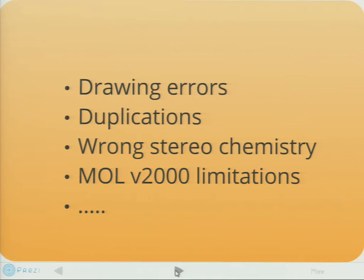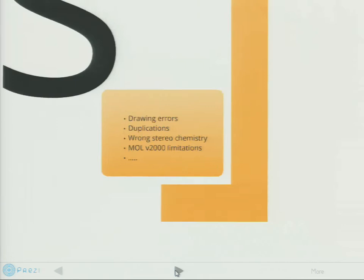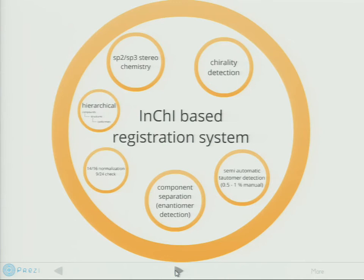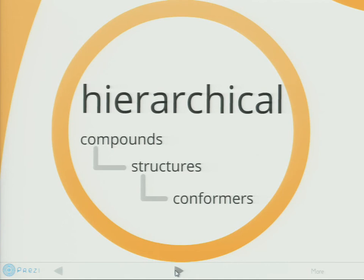These errors require a lot of normalization, and InChI in our opinion is a good starting point to create a registration system, but it is not enough — it requires more. First of all, it requires a decision about the structure of the registration system. We decided to create a hierarchical system. On the top we call this the compound layer, where we use the non-tautomeric representation. The layer below uses the tautomeric representation of structures, and a layer below that we plan to use the conformers.